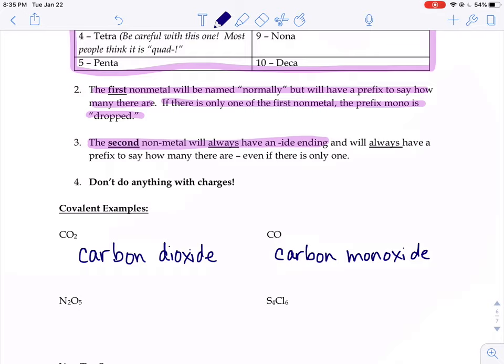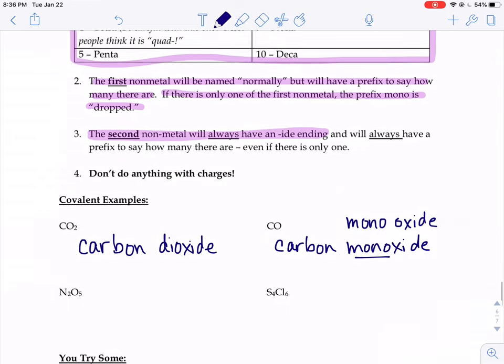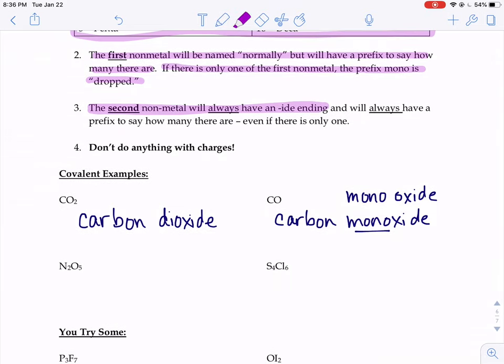The second nonmetal always has an -ide ending. And we'll always have a prefix, even if there's only one. Now, you might be wondering why I have monoxide and not mono oxide. Prefix up there says mono, not mon. Sometimes they drop this vowel sound right here just to make it sound prettier to the ear. I wouldn't mark it wrong if you wrote mono oxide, but just takes a little finessing to know when they drop that vowel sound just to make it sound prettier.